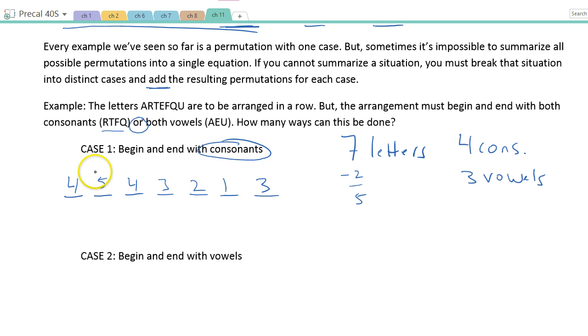In fact, I'm placing five things, I can also just shortcut that and say five factorial. So this is the same thing as four times three times five factorial. And when I do the math, I get 1440. So case one, I get 1440 ways to arrange these letters if I start and end with consonants.